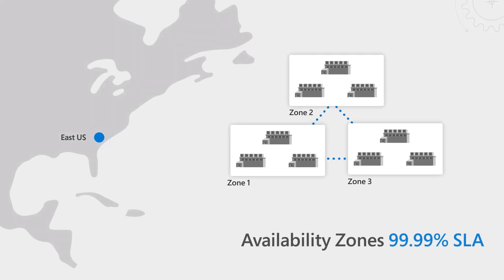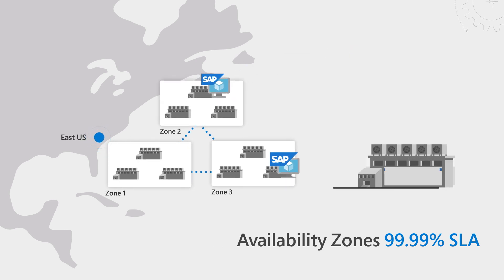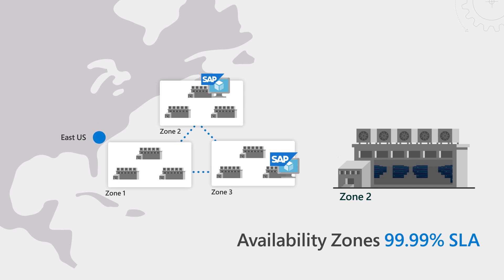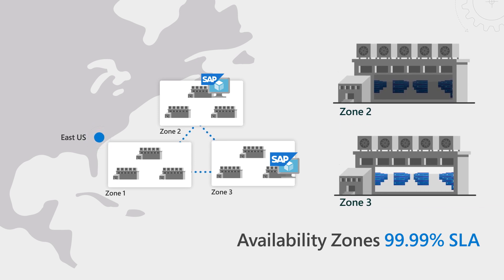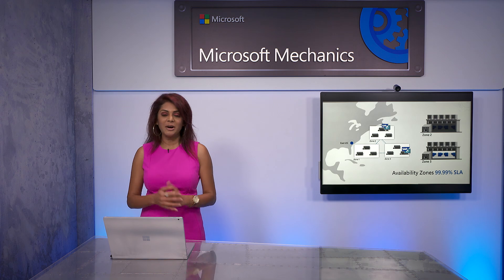Now, beyond scalability, these mission critical environments also need to be designed for high availability. One of the ways you can increase availability of your system is by leveraging Azure Availability Zones. This works by running a primary and a secondary replica of your instance in two different Azure data centers within the same Azure region. This means if anything happens to the data center with the primary instance, services will continue to run via the secondary instance without incurring downtime, reaching 99.99% availability.